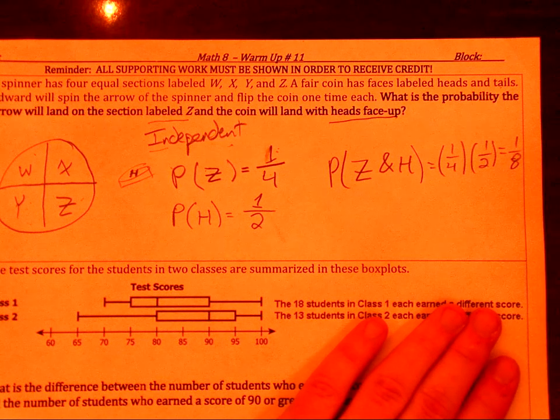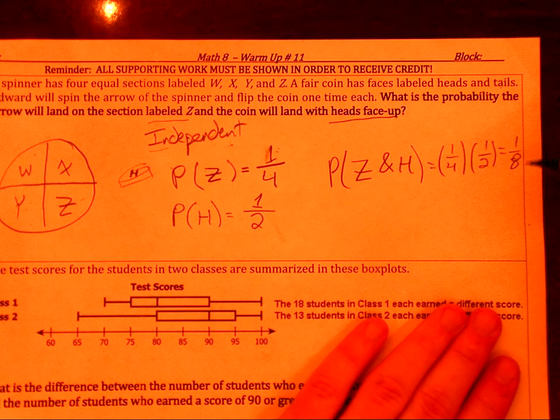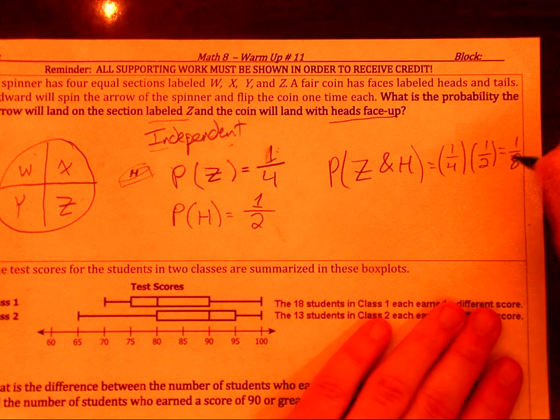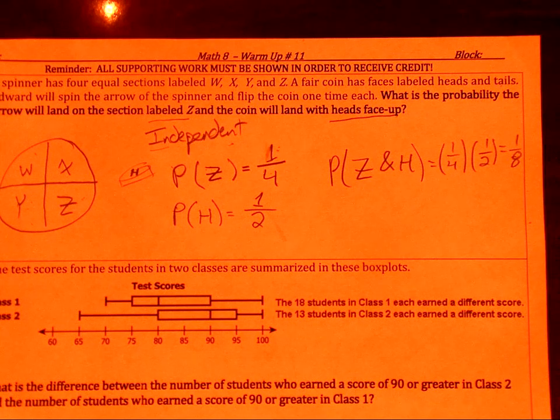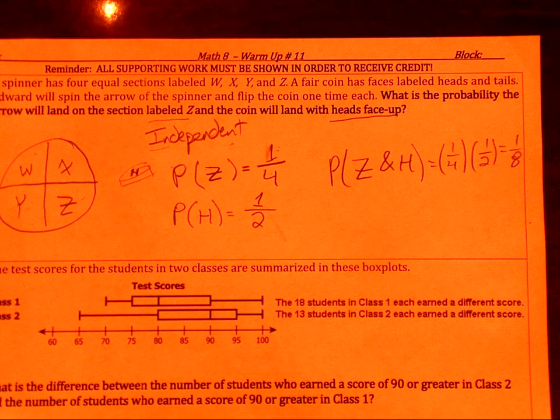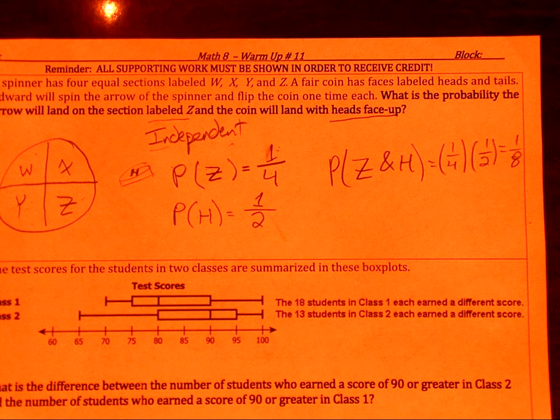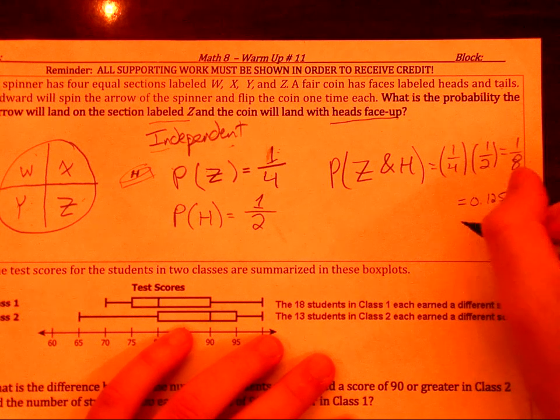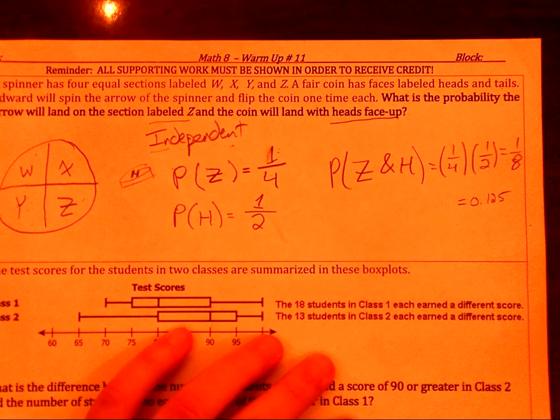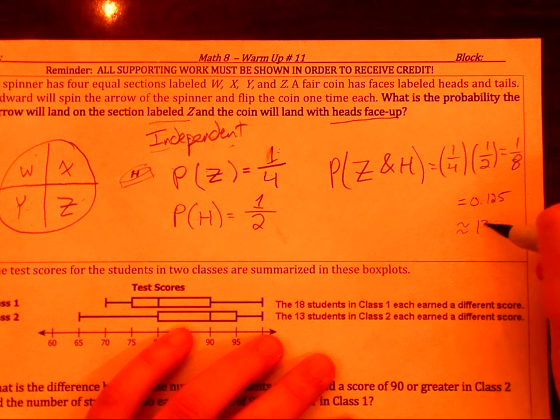Again, you can change between your fraction decimal percent. So if this is one-eighth, I believe, and I can double-check on the calculator here. If we get one-eighth, it's one divided by eight. Yep, that's that. That is equal to that zero point one two five. Again, you always round to the nearest cent. And so it would be about thirteen percent.